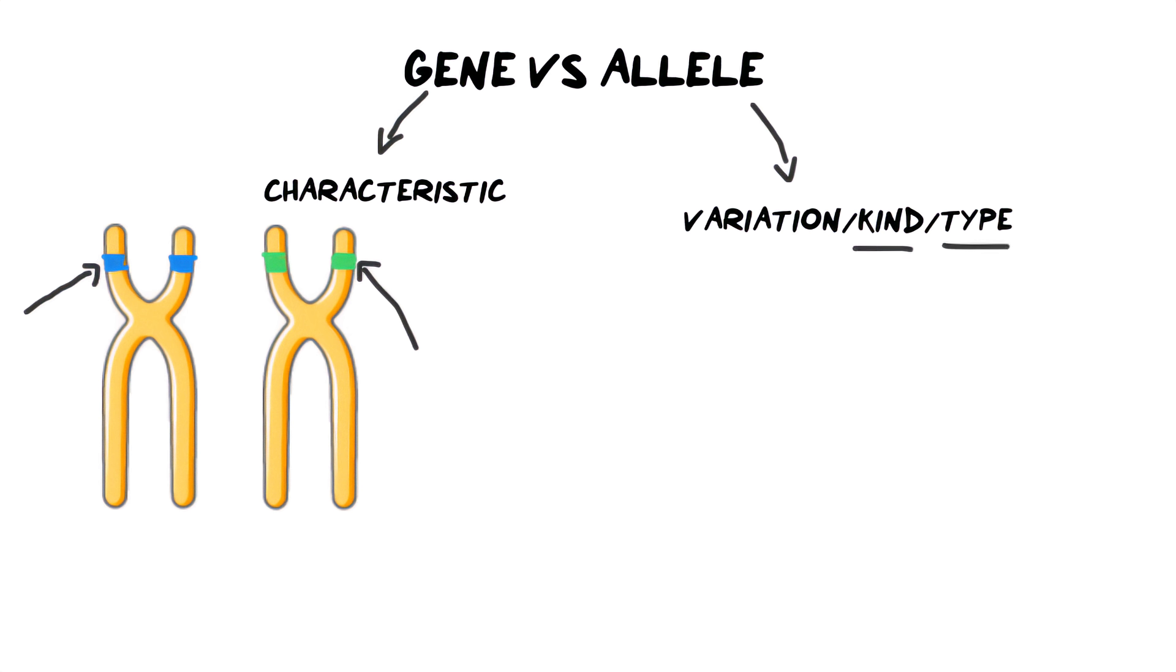And because the colors are different, we say that those are alleles. They are different kinds or different types. And so what we have here is one gene, but we have two different alleles.